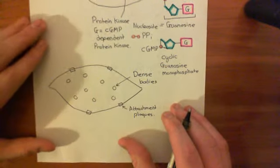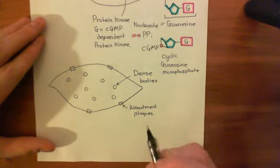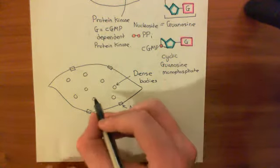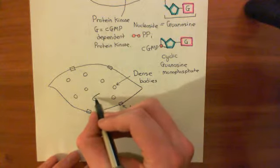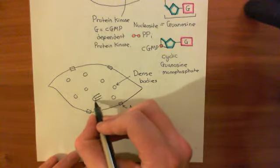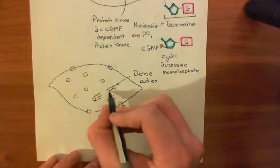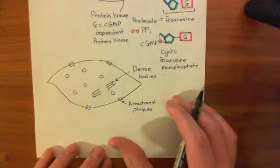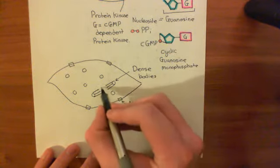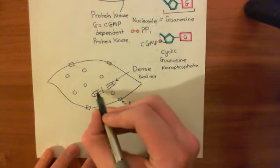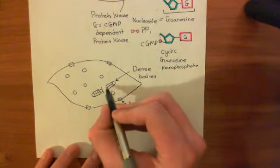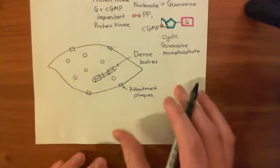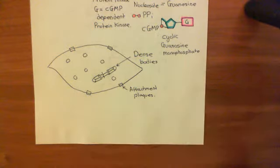Basically, the contractile units in the smooth muscle cell are suspended between the dense bodies, and between the dense bodies and attachment plaques. Each of these dense bodies has actin filaments coming off it. Then there is a proteinaceous disc in the middle, off which the myosin filaments come. The myosin filaments overlap with the actin filaments coming from the dense bodies, and that makes a contractile unit.